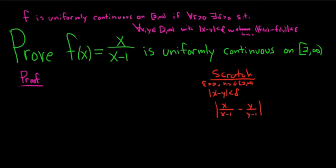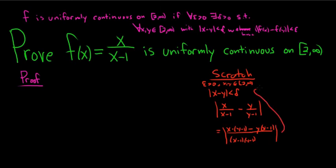So if we look at that distance, f of x is x over x minus 1, and f of y is y over y minus 1, and this has to be less than epsilon. The natural thing to do here is perform the subtraction. The LCD here is x minus 1 times y minus 1. To perform the subtraction, it's x times y minus 1, minus y times x minus 1, all over that LCD.